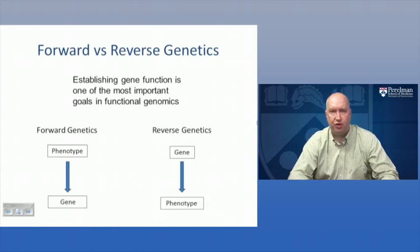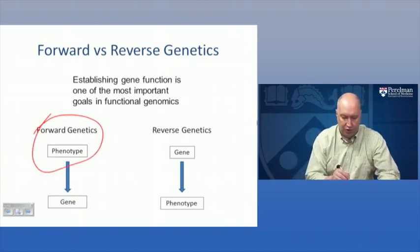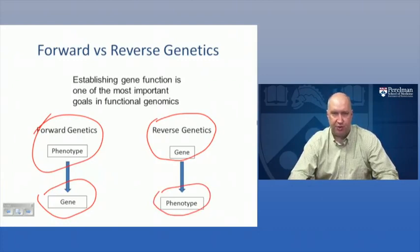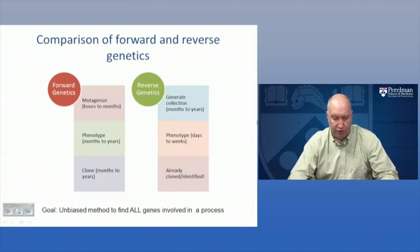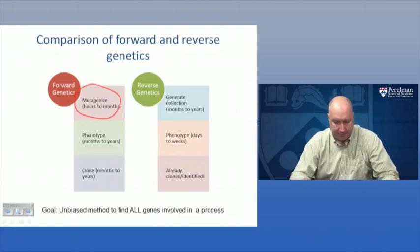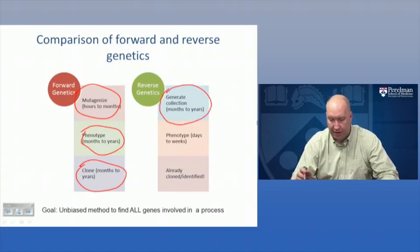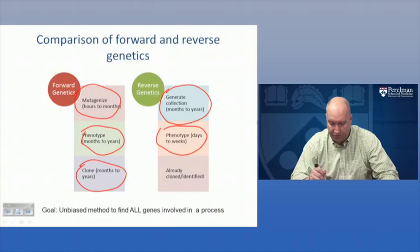First, the difference between forward and reverse genetics - John Murray gave you a lecture on forward genetics. Forward genetics starts with a phenotype and then you try to determine what gene caused that phenotype. Reverse genetics starts with the gene, generating a knockout or knockdown of a particular gene and then figuring out what phenotype is a consequence of that knockdown. With forward genetics, mutagenesis can be quick for a dominant screen or longer for a recessive screen, taking months. Phenotyping and cloning can each take months to years. Whereas with reverse genetics, knocking out every gene often takes months to years, but phenotyping takes days to weeks, and because the gene is already identified, that step is largely a lookup table - practically instantaneous.